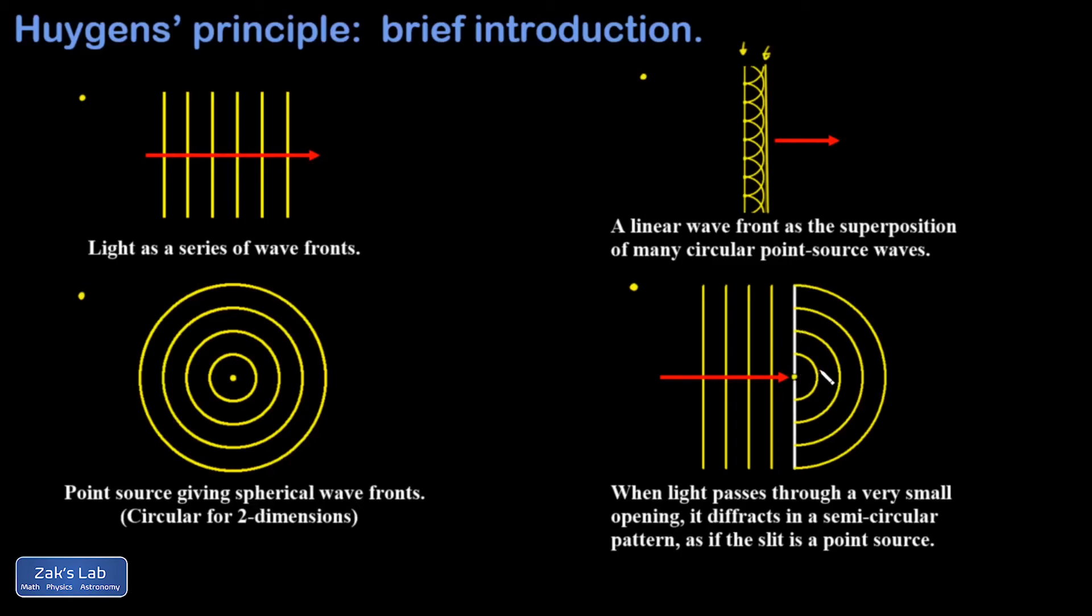So on the other side of the slit, we're going to see a point source wave pattern. So these semi-circles that are expanding outward from that single point source.